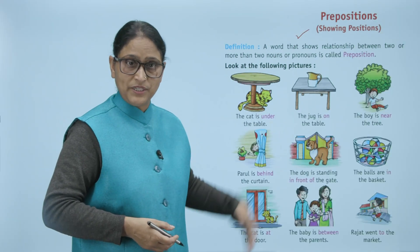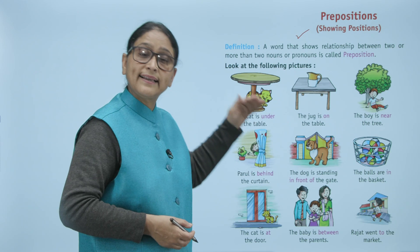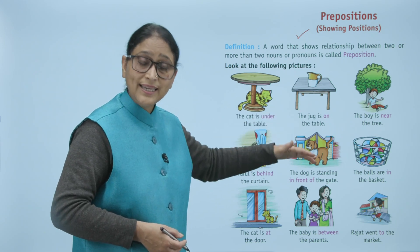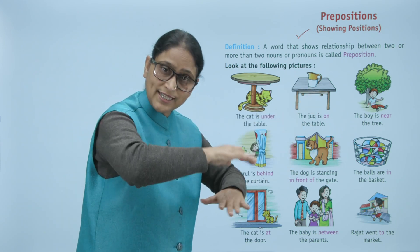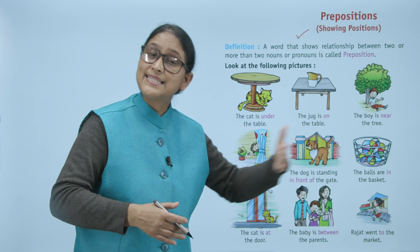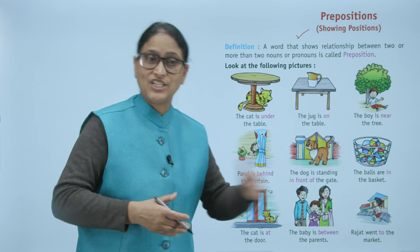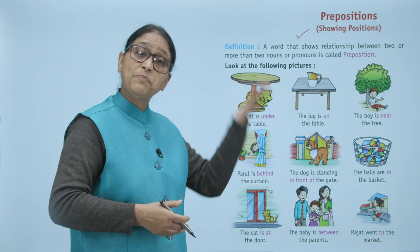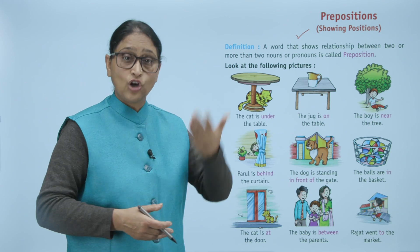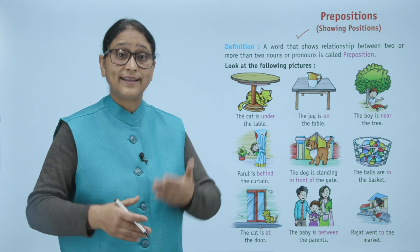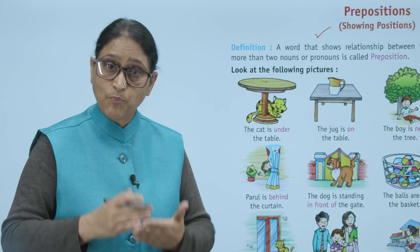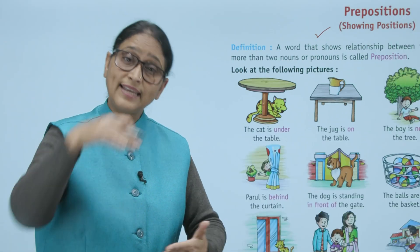Look at the following pictures. The cat is under the table. The jug is on the table. The boy is near the tree. Parool is behind the curtain. The dog is standing in front of the gate. The balls are in the basket.